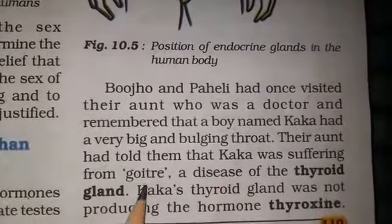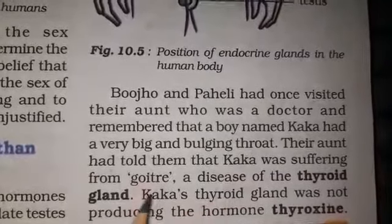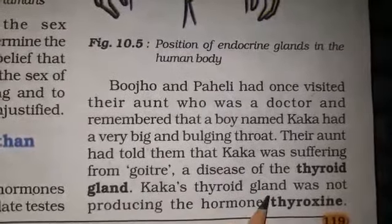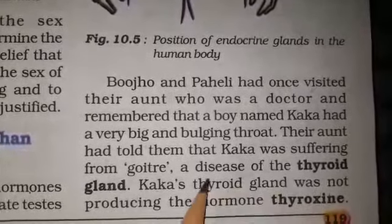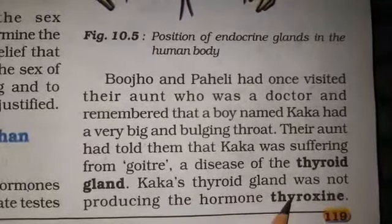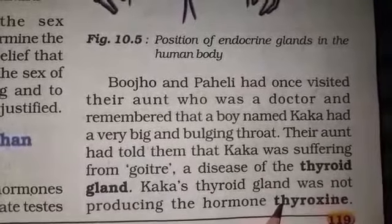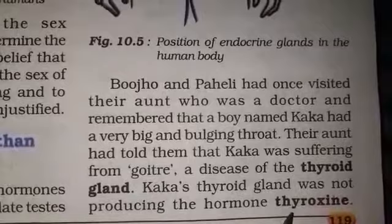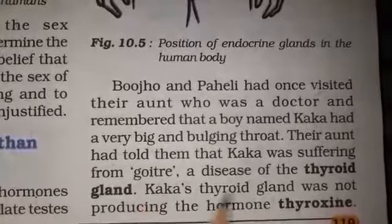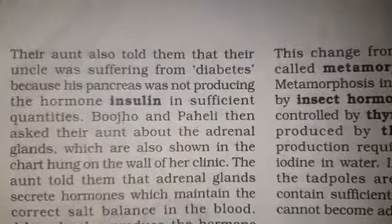Kaka was suffering from a disease called goiter, which is a disease of the thyroid gland. The thyroid gland was not producing the hormone thyroxin. When the thyroid gland does not produce thyroxin sufficiently, the person suffers from goiter.